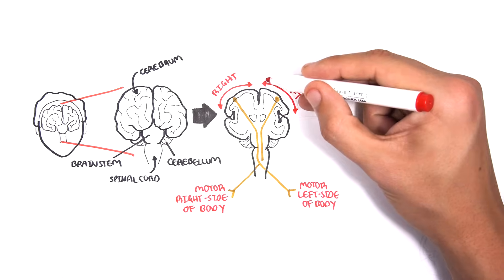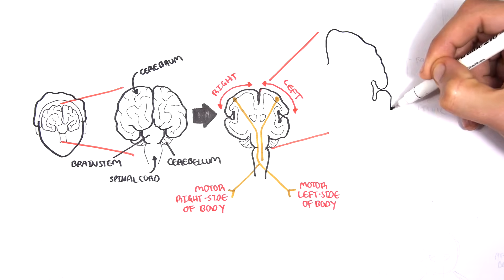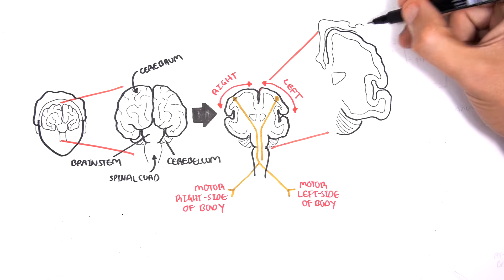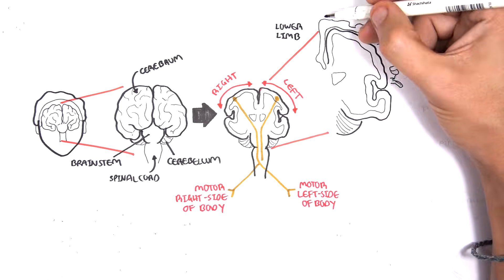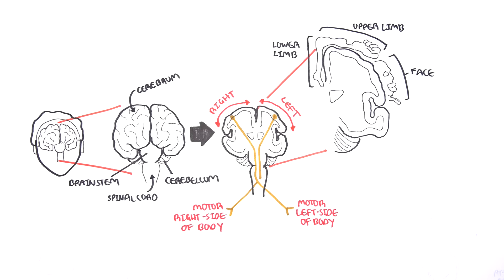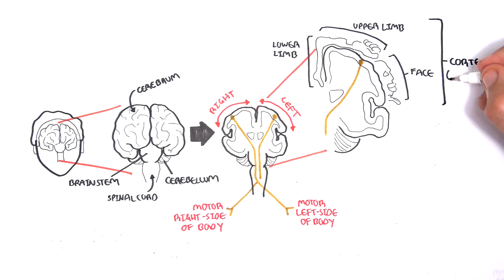Zooming into the left motor cortex, we can also see the left cerebellum at the bottom. The motor cortex has designated areas for different parts of the body — for example, this area correlates with the lower limbs, this area the upper limbs, and here the facial area. So a neuron arising from the upper limb area of the left motor cortex will supply motor to the hand on the right side, because it supplies the opposite side of the body. This is the motor cortex, more specifically the pyramidal group, because neurons involved here control voluntary, conscious movement.